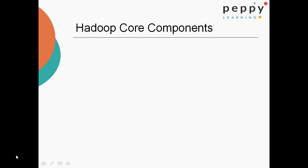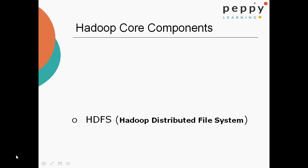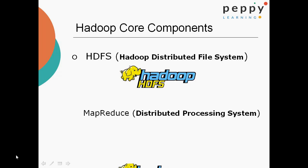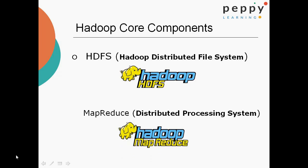Hadoop Core Components. HDFS stands for Hadoop Distributed File System, which is a reliable file system for distributed files. MapReduce is a distributed processing system which can process huge amounts of data.